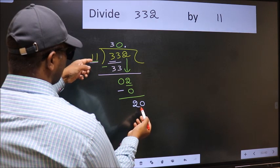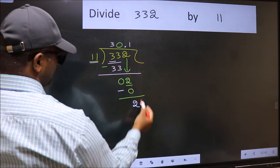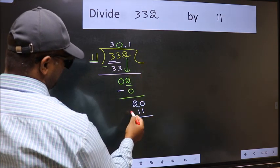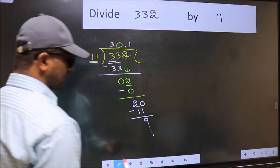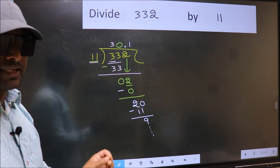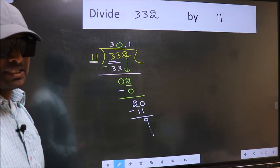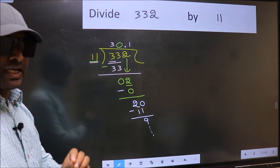A number close to 20 in 11 table is 11 once, 11. Now you subtract, you get 9. And continue the division. I am not doing that. Did you understand where does the mistake happen? You should not do that mistake.